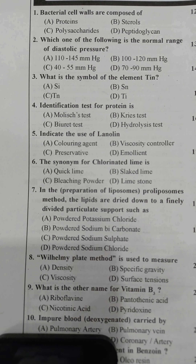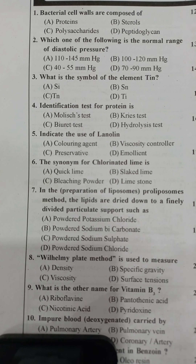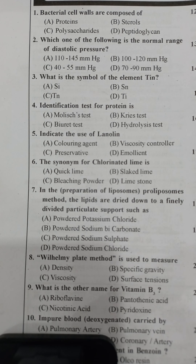Next: which one of the following is the normal range of diastolic pressure? The correct answer is 70 to 90 mmHg. Third question: what is the symbol of the element tin?